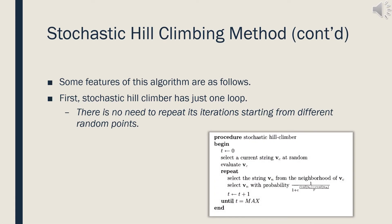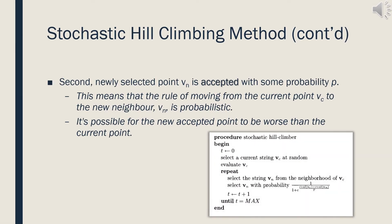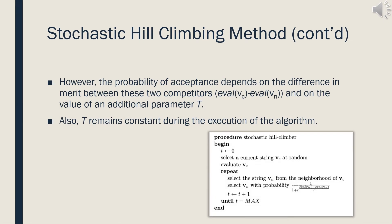Let's talk about two features of stochastic hill climbing. First, the stochastic hill climber has just one loop, so there is no need to repeat its iterations starting from different random points. Second, there is some probability p to accept the newly selected point vn. This means that moving from the current point to the new neighbor vn is probabilistic — it's possible to move towards a worse point than the current point. The probability of movement depends on the difference in merit between these two competitors and on the value of an additional parameter t, which is constant during the execution of the algorithm.